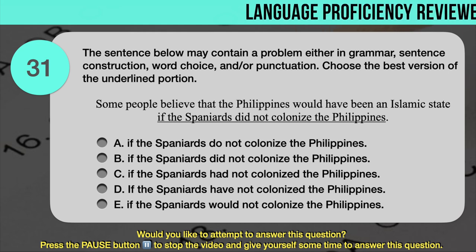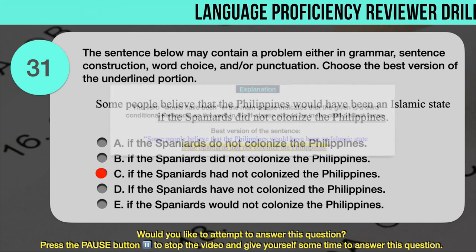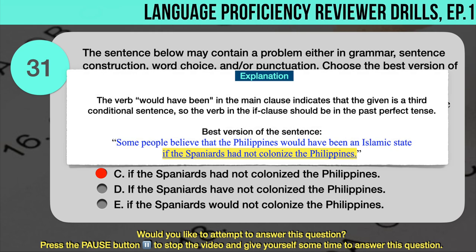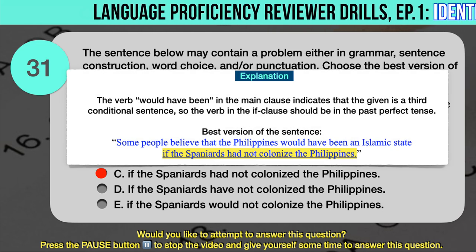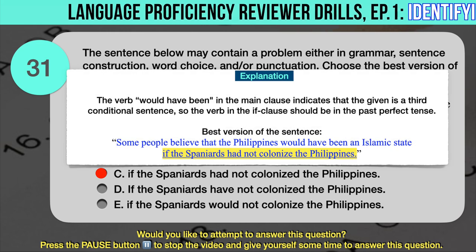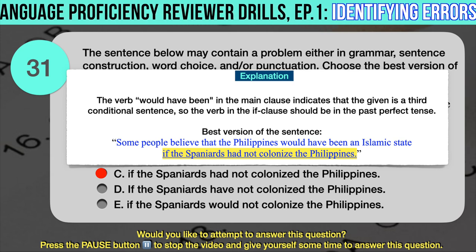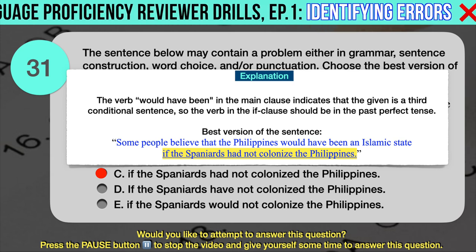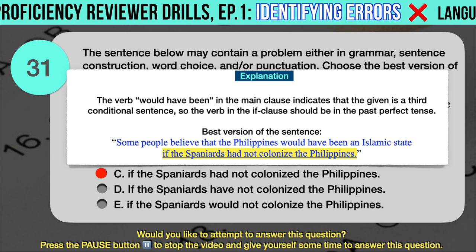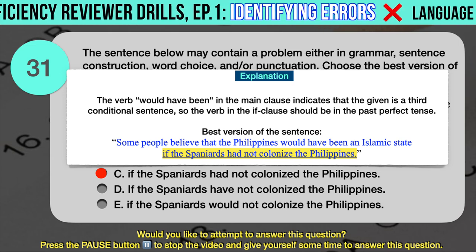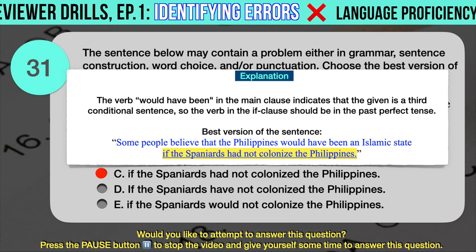The correct answer is C. The best version is 'if the Spaniards had not colonized the Philippines.' The verb 'would have been' in the main clause indicates a third conditional sentence, so the verb in the if-clause should be in the past perfect tense.